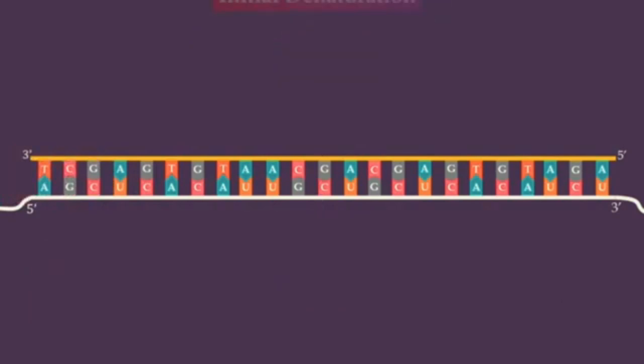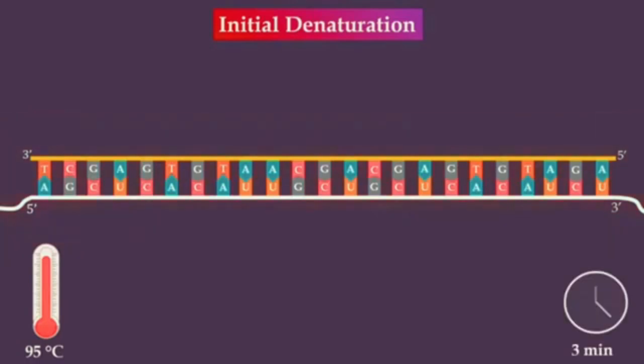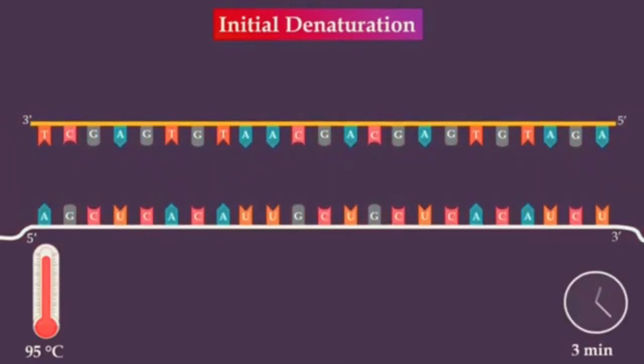Next, an initial denaturation step is applied, causing denaturation of the RNA-DNA hybrids. This step is required for the activation of DNA polymerase and simultaneously the inactivation of reverse transcriptase.